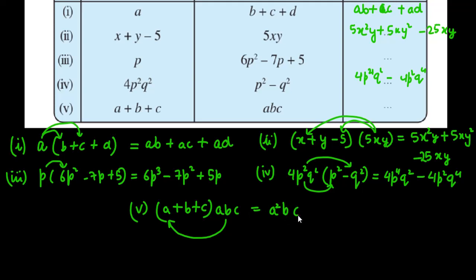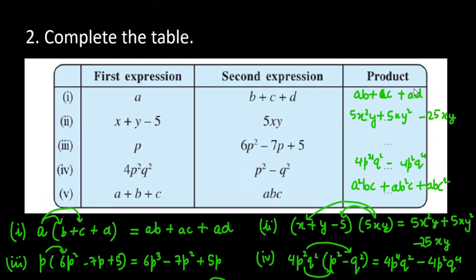Then, आप ABC को B के साथ मलिप्लाय करोगे. It will give you AB square C. ABC को अब आप C से मलिप्लाय करोगे. तो C में चेंज आएगा. And it will be ABC square. So, your answer is A square BC plus AB square C plus ABC square. Now, we will move on to question number 3.